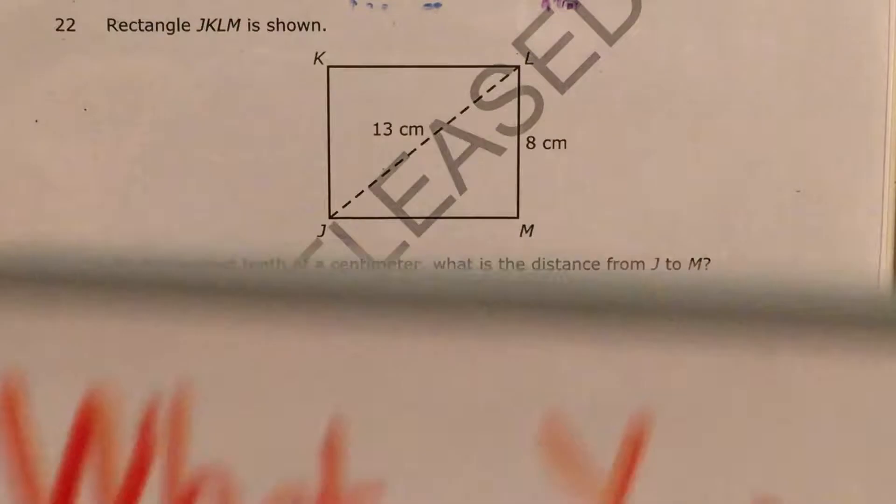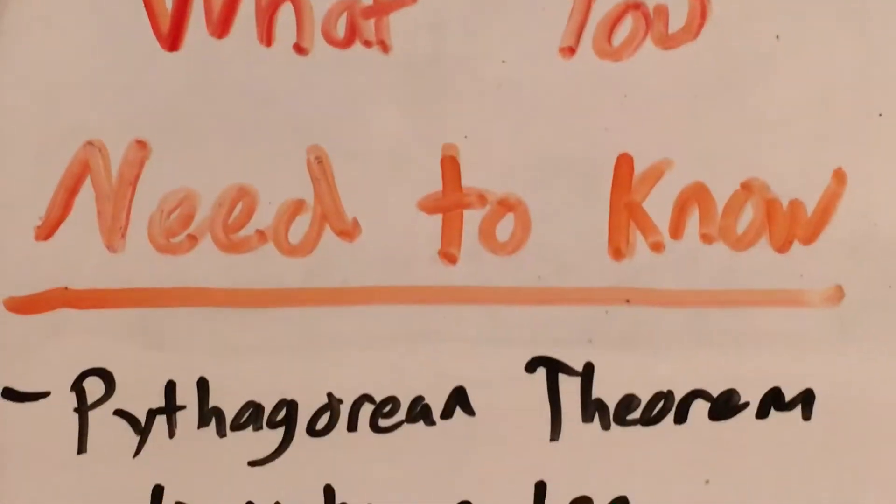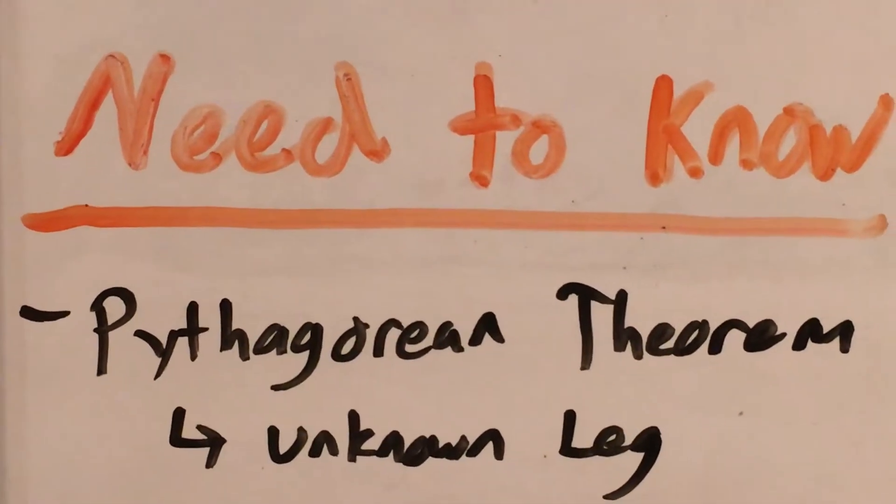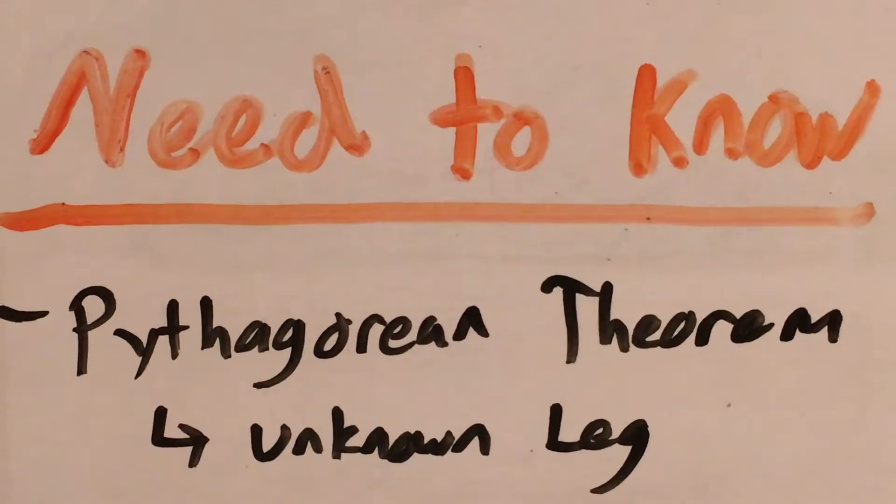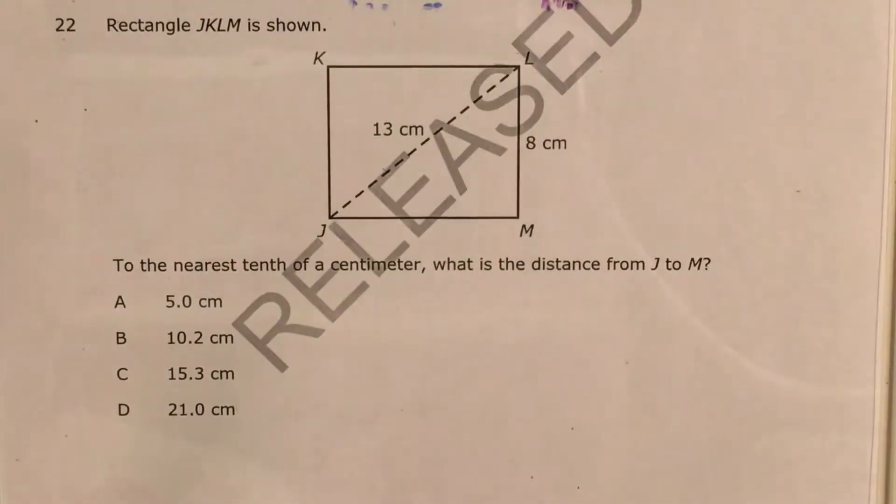So to do a problem like this, this is, unfortunately, a dreaded Pythagorean theorem problem, and it's not even the easy type where we can just find the hypotenuse. This time we have to find one of the legs of a right triangle.